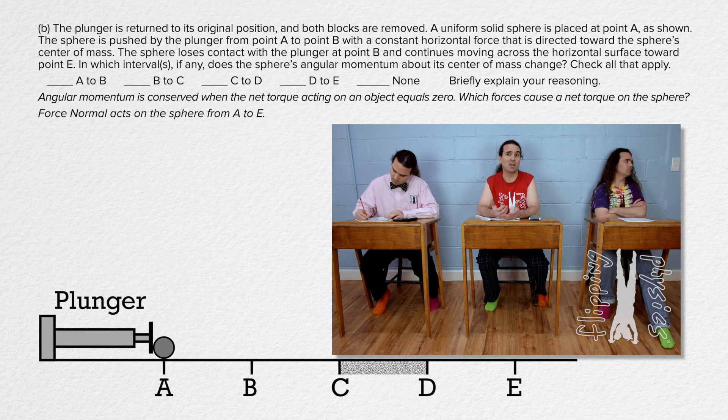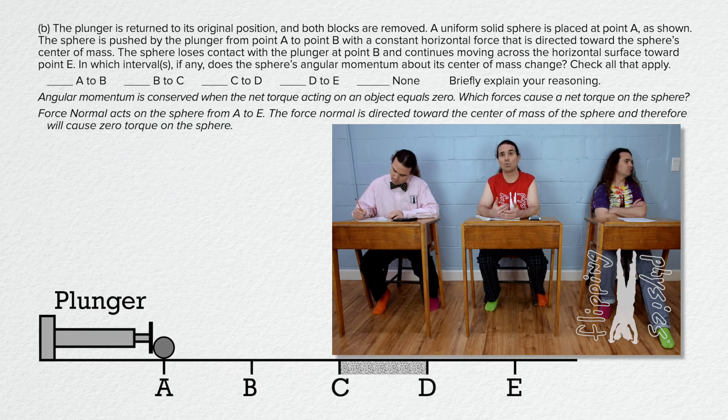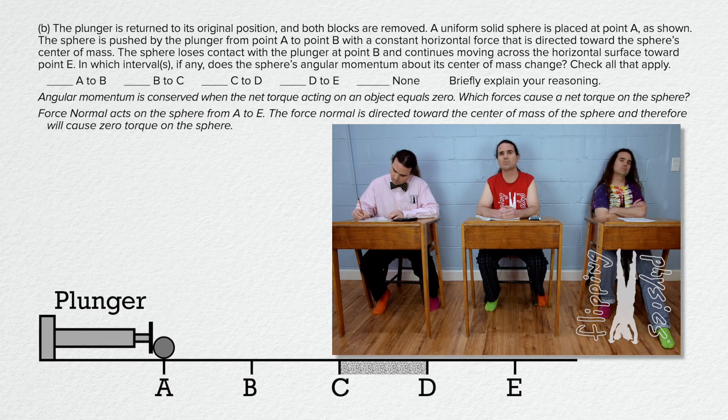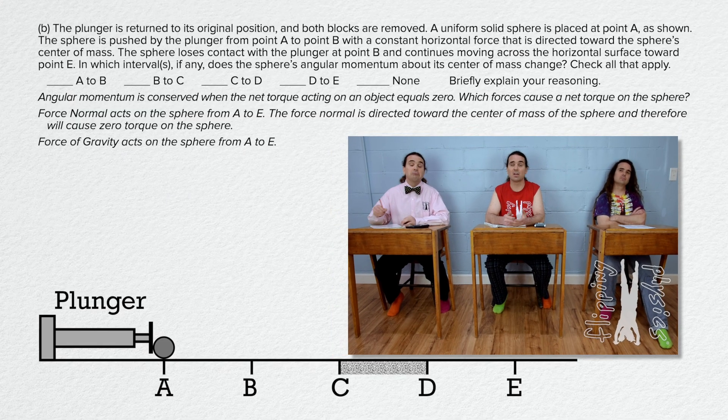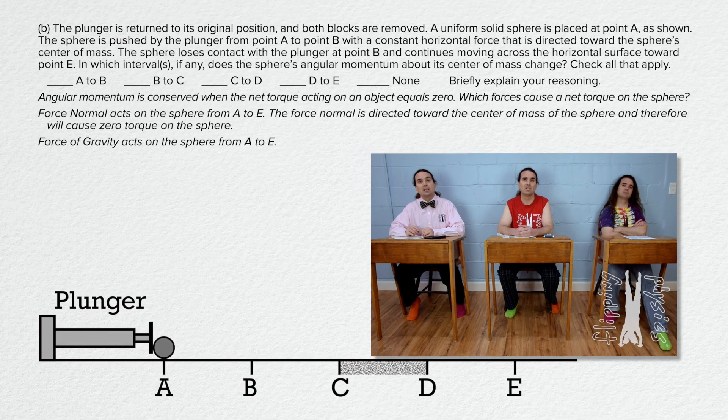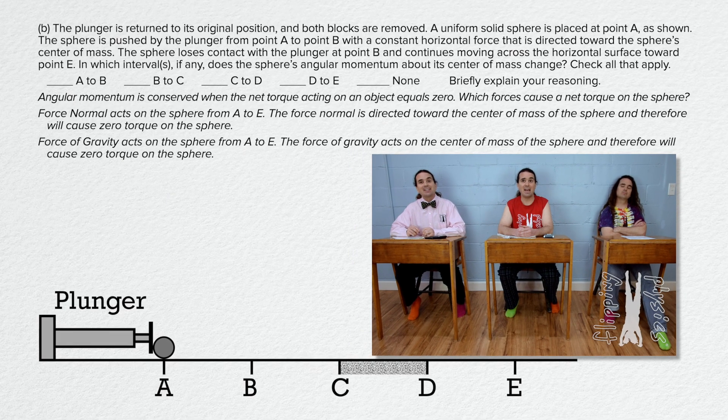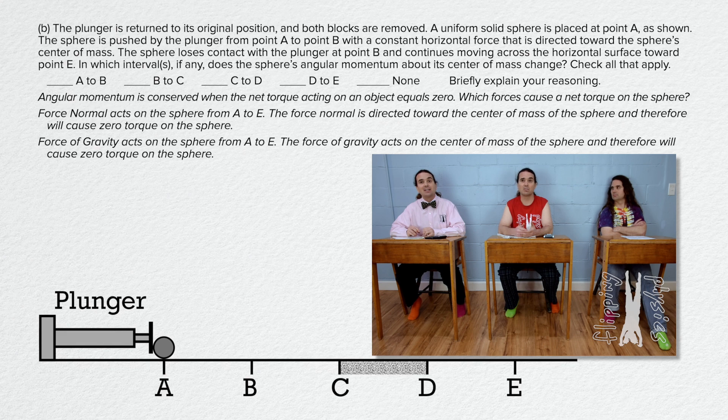Force normal acts on the sphere from A to E. The force normal is directed toward the center of mass of the sphere and therefore will not cause a torque on the sphere. The force of gravity acts on the sphere again all the way from A to E. The force of gravity acts on the center of mass of the sphere and therefore will also not cause a torque on the sphere.